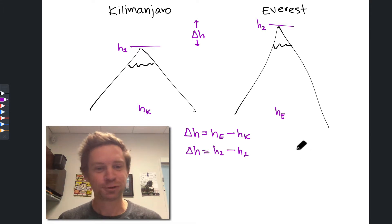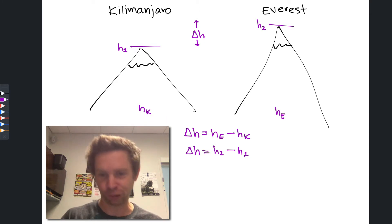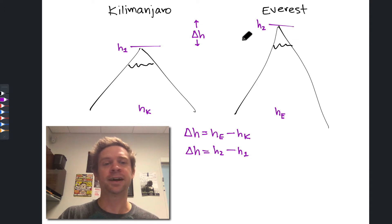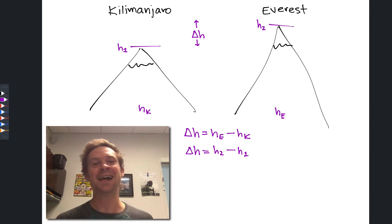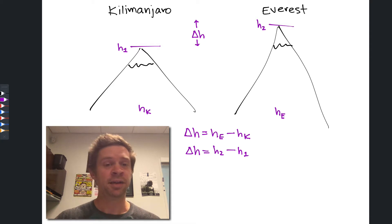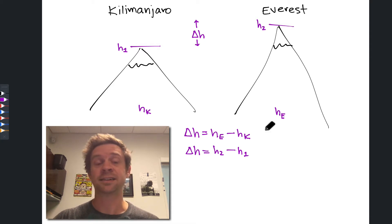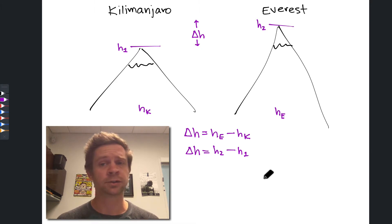A third way of doing this without climbing any mountains at all is to look up the height of Mount Kilimanjaro and the height of Mount Everest, then determine the height differential by subtracting h sub k from h sub e. It's key, however, that the process of recording the heights is standardized for both mountains — from a common point of reference. Sea level, or some other common reference point, has to be the standard for both mountains; otherwise the heights are not directly comparable.